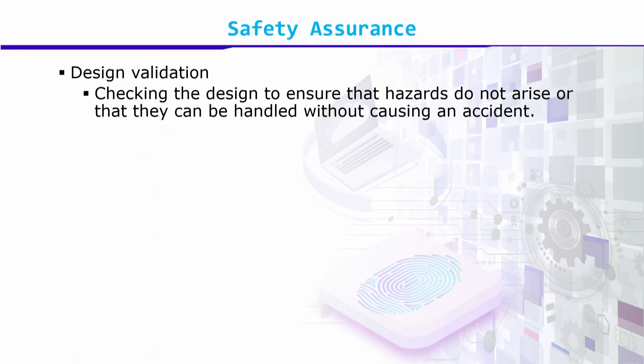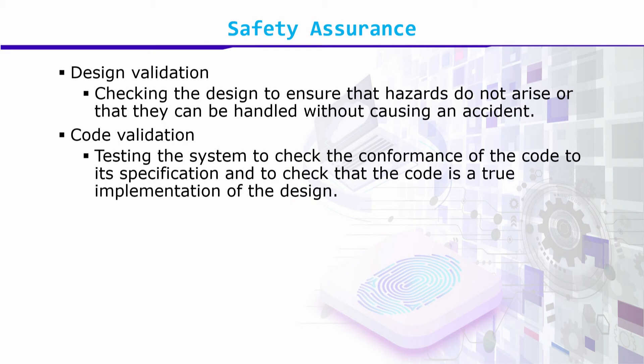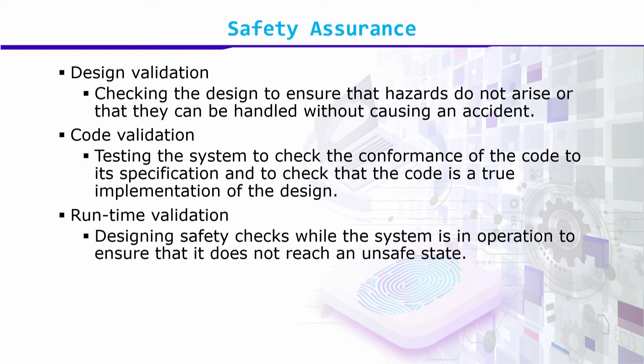Safety assurance involves design validation — checking the design to ensure that hazards do not arise or can be handled without causing any accident. Code validation involves testing the system to check the conformance of the code to its specification and that the code is a true implementation of the design. Runtime validation involves designing safety checks while the system is in operation to ensure it does not reach an unsafe state.